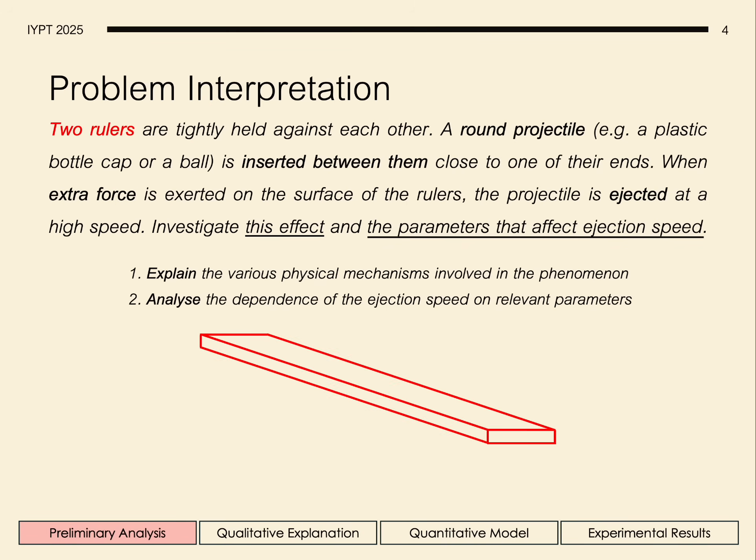We define a ruler as a plate whose thickness is smaller than the width, which itself is smaller than the length. Our third task will be to design an experimental setup to allow us to accurately investigate the phenomenon.